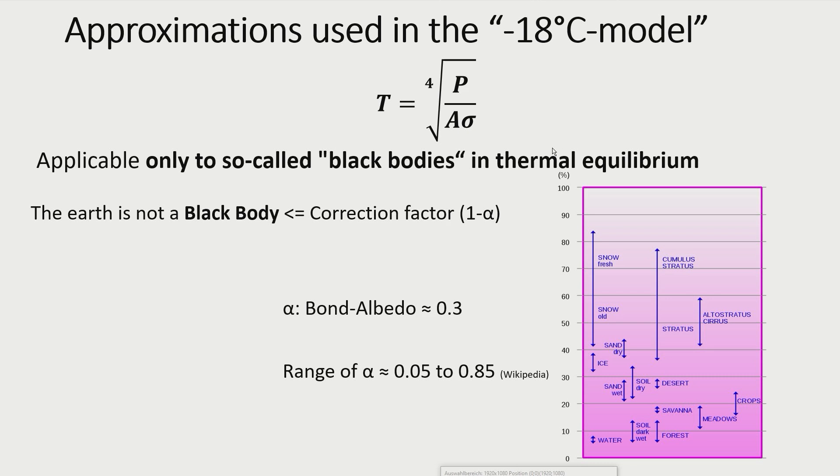Water, dark wet soil and forests have the lowest albedo, not far from 0. Snow and clouds have the highest reflectivity with alpha values up to 0.85.